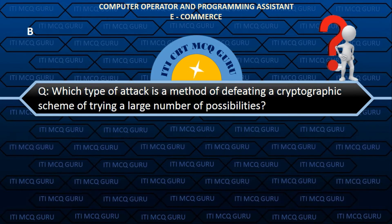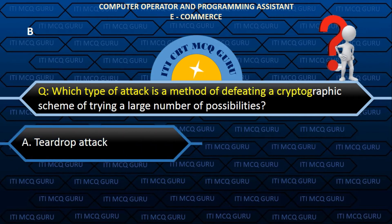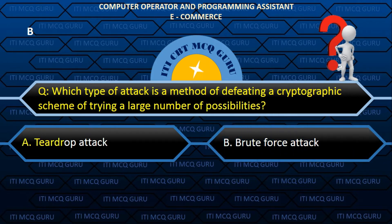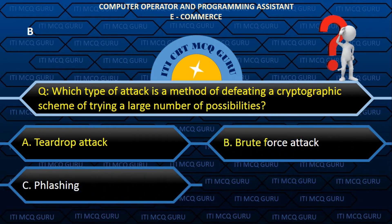Which type of attack is a method of defeating a cryptographic scheme by trying a large number of possibilities? B. Brute force attack.